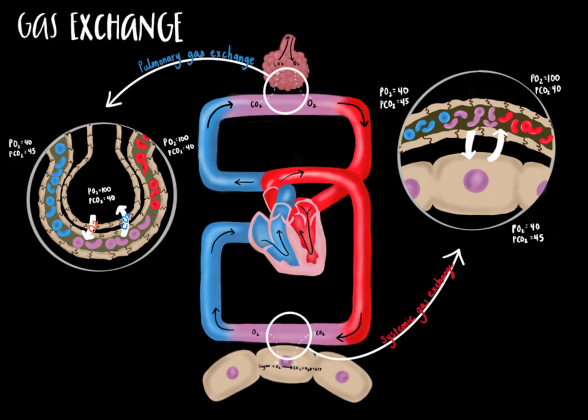It is the opposite for carbon dioxide. The partial pressure of carbon dioxide is higher in the pulmonary capillaries than in the alveoli — 45 mmHg in the deoxygenated blood versus 40 mmHg in the alveolar space. As a result of this gradient, carbon dioxide diffuses into the alveoli. Once both gases have diffused, the oxygen will be transported back to the heart and pumped throughout the body to all of the systemic tissues, while carbon dioxide is expelled out of the body via exhalation.